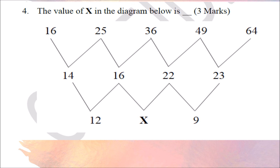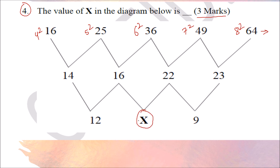Question 4 is a 3-mark question: find the value of X in the diagram. I can see the numbers are 4 squared (16), 5 squared (25), 6 squared (36), 7 squared (49), and 8 squared (64). We need to find X. Now, looking at how 14 is derived: 6 plus 1 gives digit sum 7, and 2 plus 5 gives digit sum 7, and 7 plus 7 is 14.